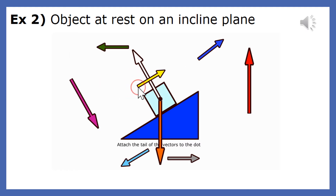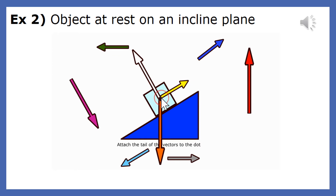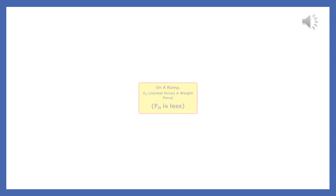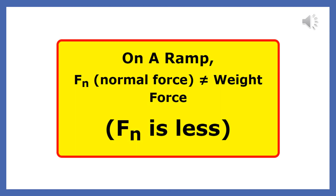On a ramp, the normal force is always smaller than the weight force. Once again, on a ramp, the normal force does not equal the weight force — the normal force is less than the weight force.